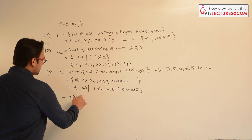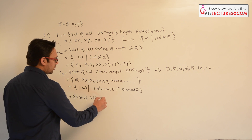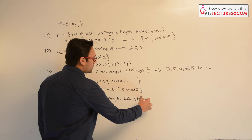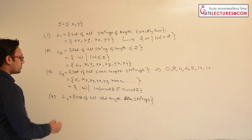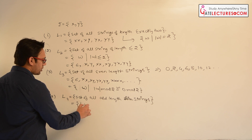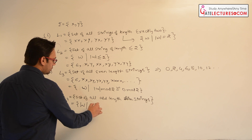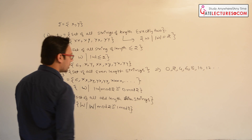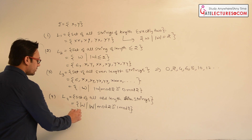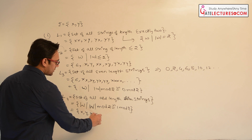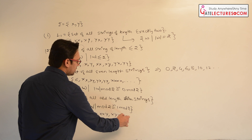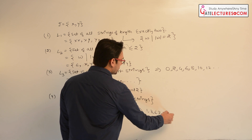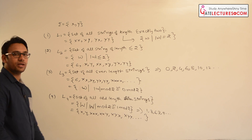Now let us say we have language L4 which is the set of all odd length strings. This can also be written as {w | length of w mod 2 ≡ 1 mod 2}. The strings present here will be: x, y, xxx, xxy, xyx, xyy, yxx, yyx, and so on — strings of length 1, 3, 5, 7, 9, and so on.